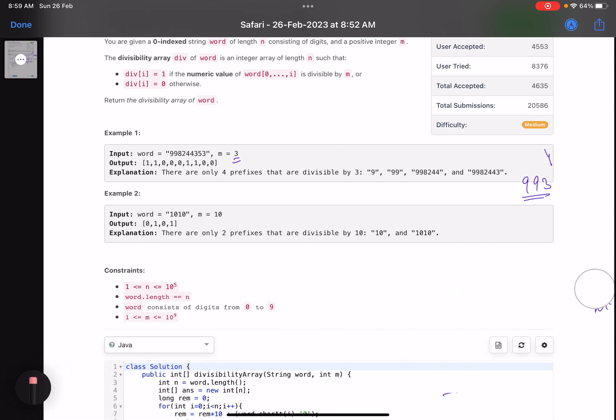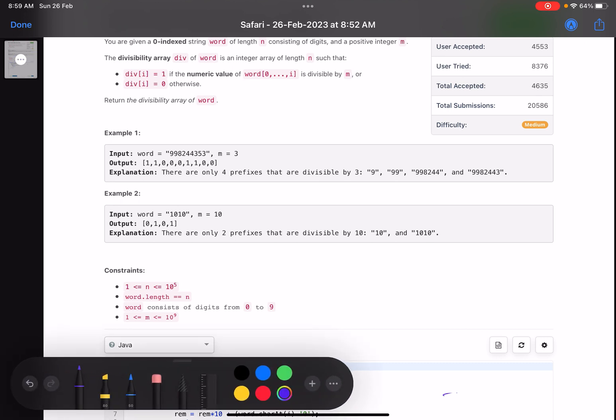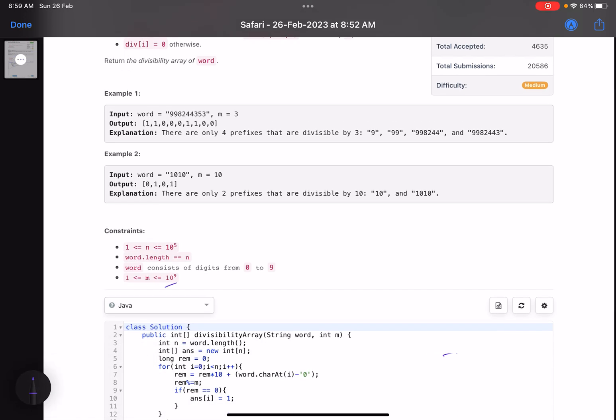I think there is one more reason why there are so many wrong answers. The value of m here is 10 raised to power 9, so when you calculate the remainder, that can go into a range of 10 raised to power 9 only. The max value is 10 raised to power 9 minus 1. As soon as you multiply it by 10, this guy goes beyond integer data type. So here the data type of remainder needs to be long, that's the other trick.